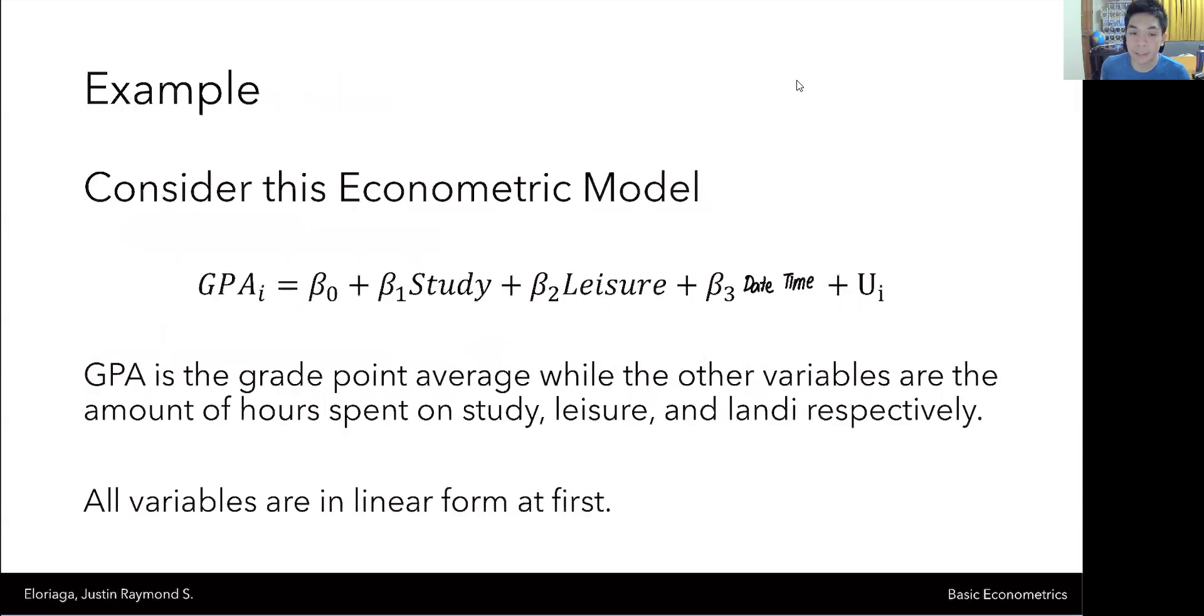If you consider this simple econometric model, say we have GPA of a college student as the dependent variable, and we have the hours of study that the person does, then the hours of leisure time that the person does. And lastly, say the person was in a relationship, then we also have hours spent on a date. Automatically, you can already smell something fishy with the model.